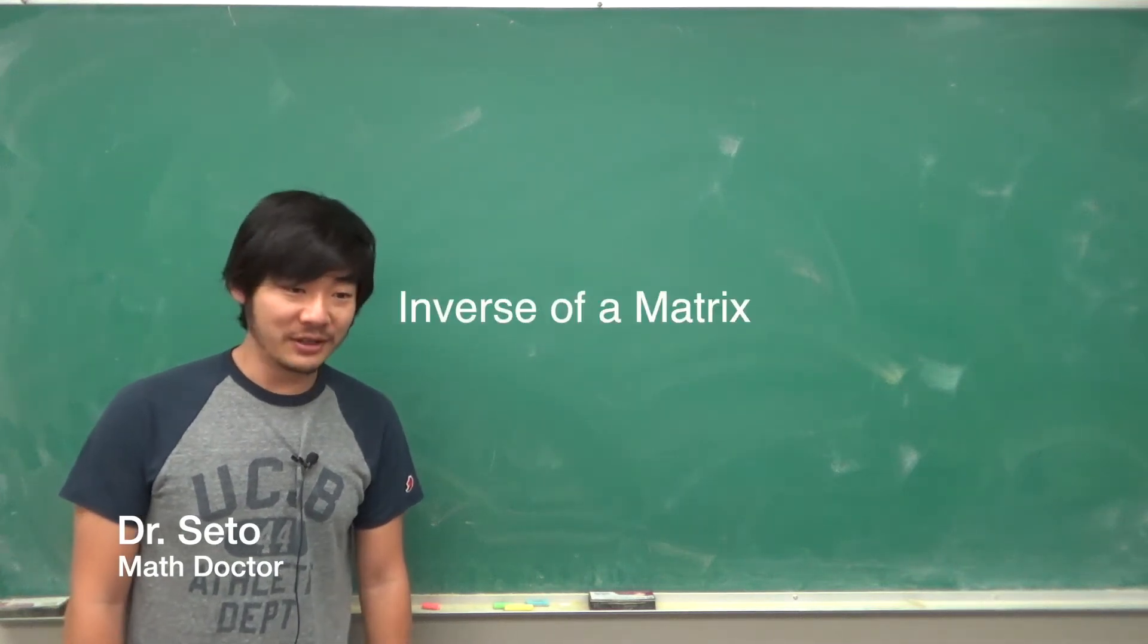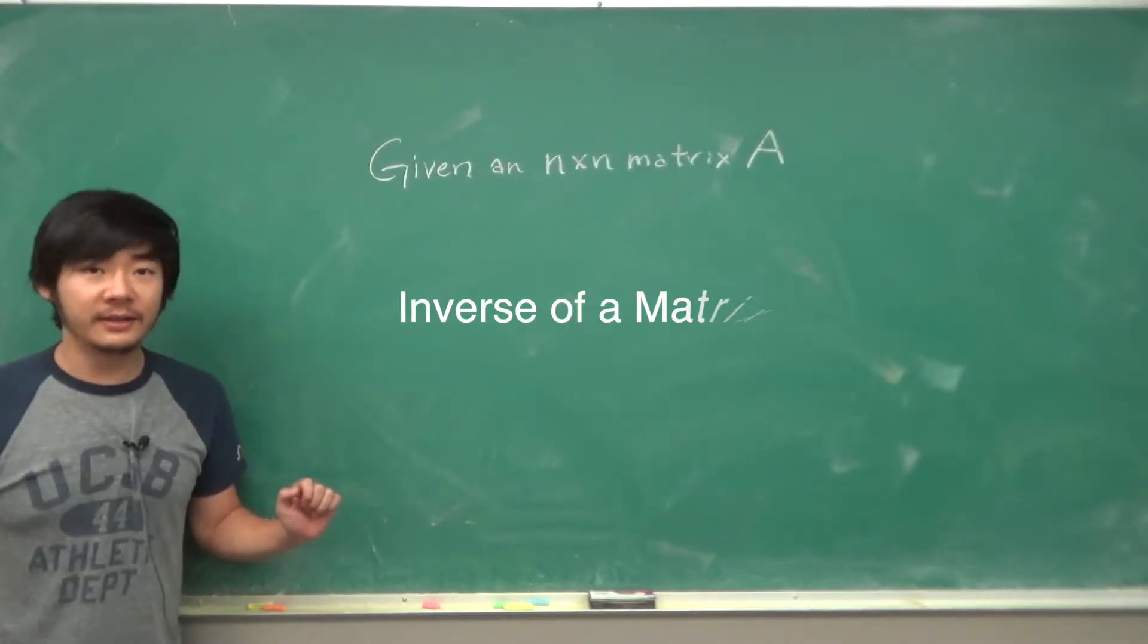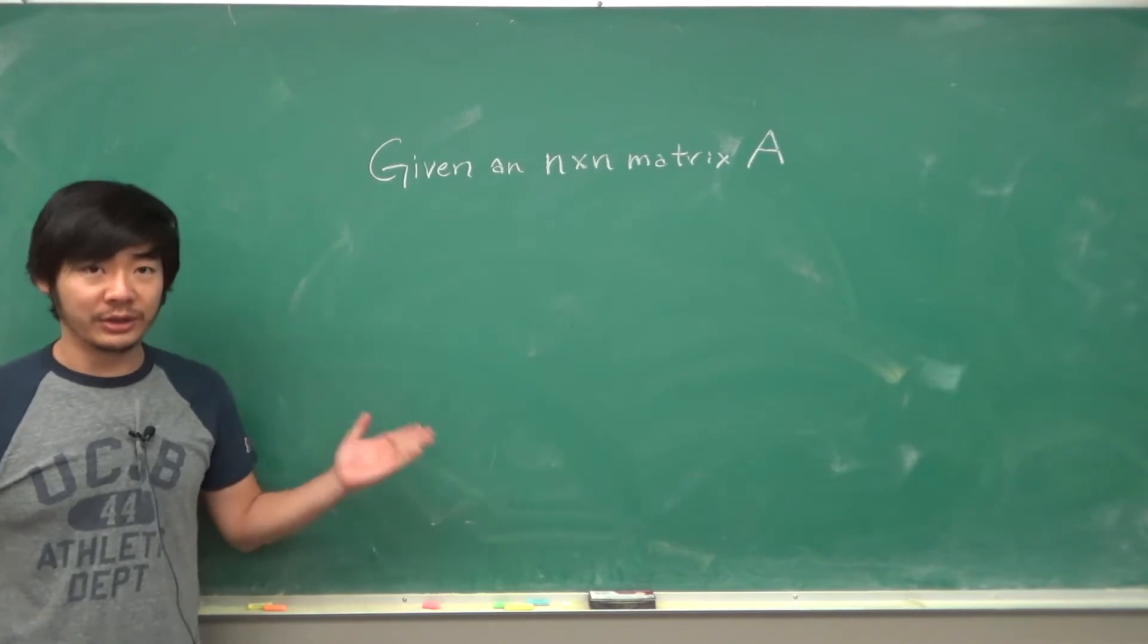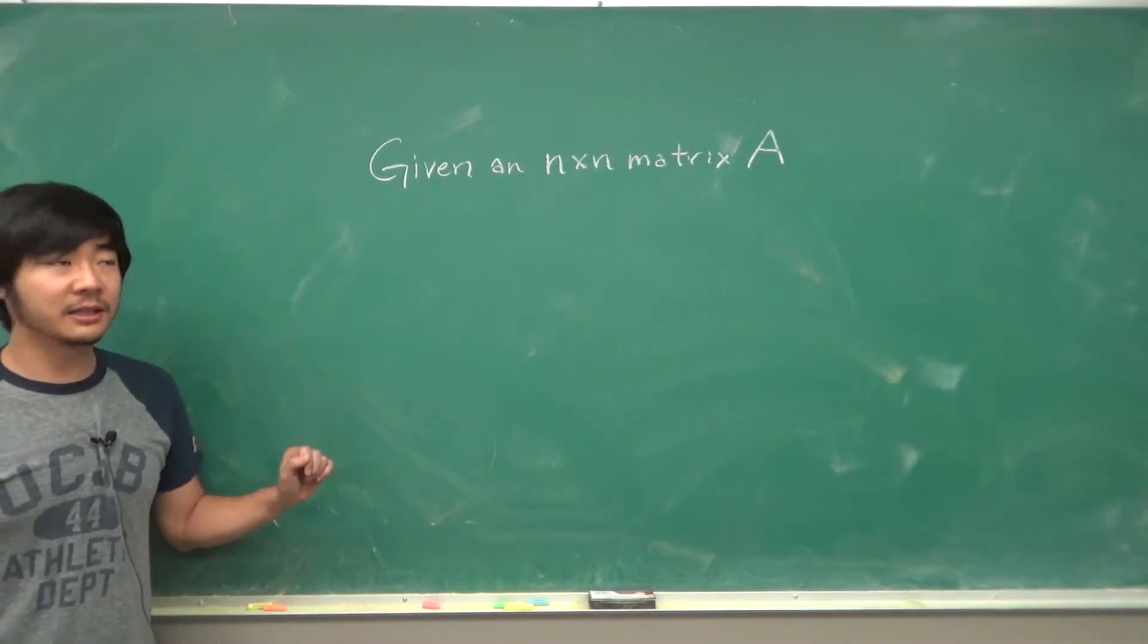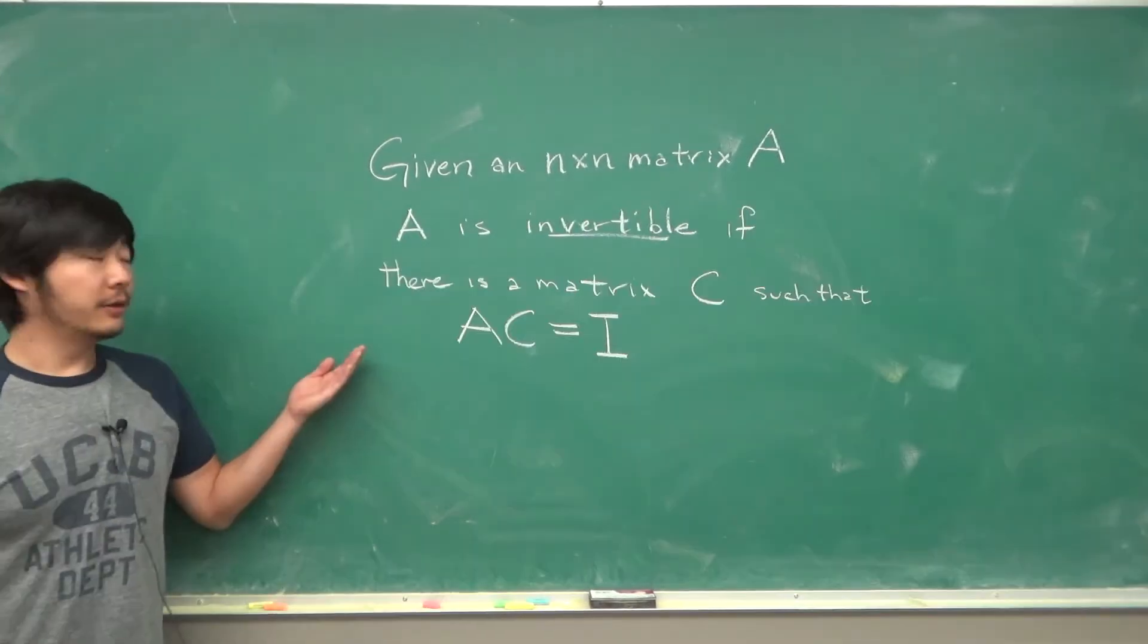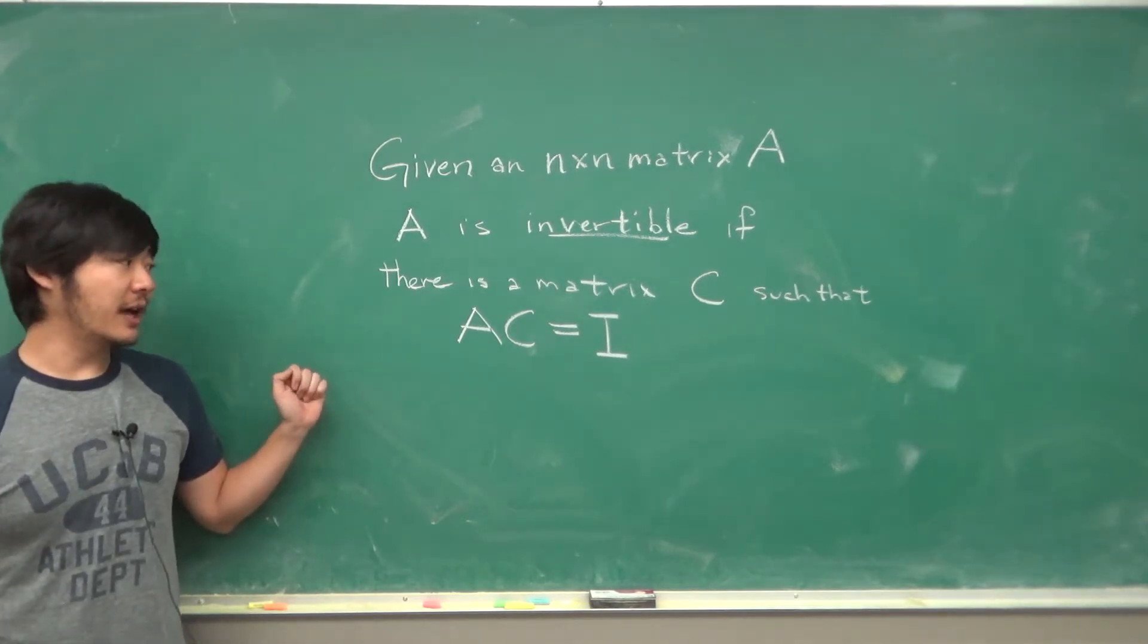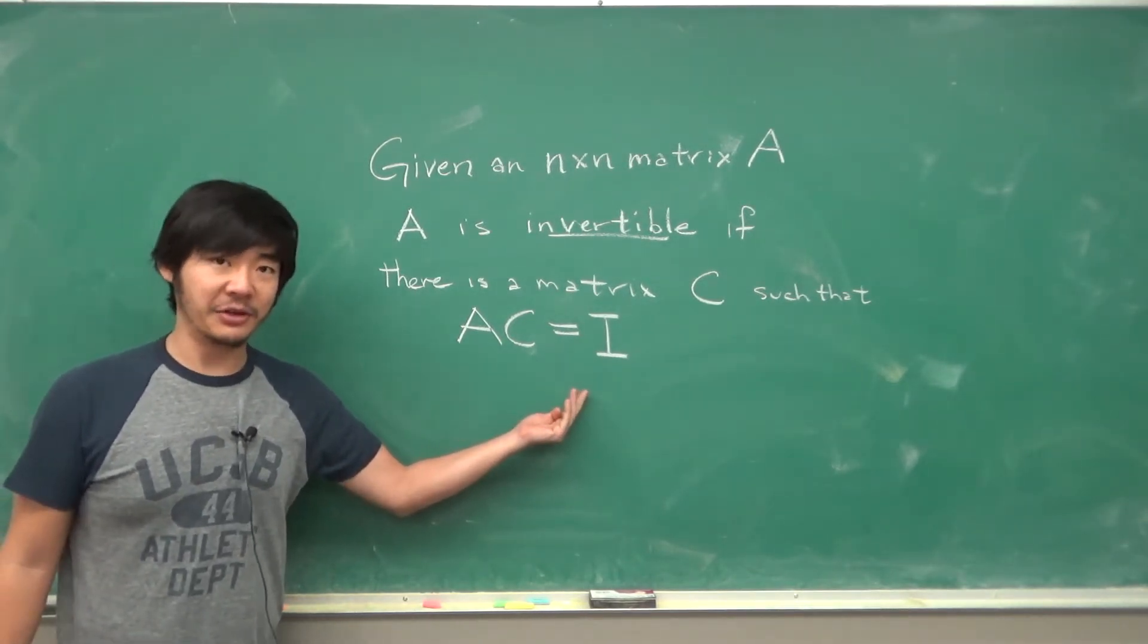Today we will talk about the inverse of a matrix. Given an n-by-n matrix, so a square matrix, we say that A is invertible if there is a matrix C such that A times C is equal to the identity matrix.